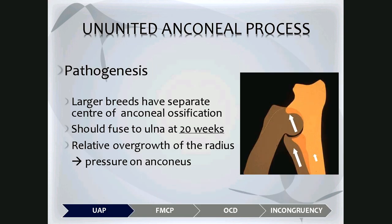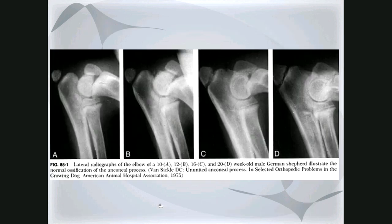The first condition we'll look at is ununited anconeal process. This typically occurs in larger breed dogs because they have a separate center of ossification for the anconeus. The anconeus should fuse to the rest of the ulna by 20 weeks or five months of age. In cases where there's relative overgrowth of the radius, as it keeps growing relative to the ulna, it places pressure on the condyles of the humerus, which then prevents the anconeal process from fusing.